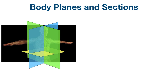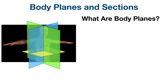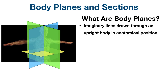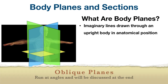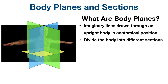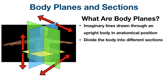Now that we have a good understanding of the anatomical position, let's talk about the different planes of the body. The terms body planes and sections are often used interchangeably, but they actually have different definitions. Body planes are imaginary lines drawn through an upright body that's in anatomical position. The major planes can run vertically or horizontally and they divide the body into sections — right and left, upper and lower, or front and back, depending on the direction of the cut.